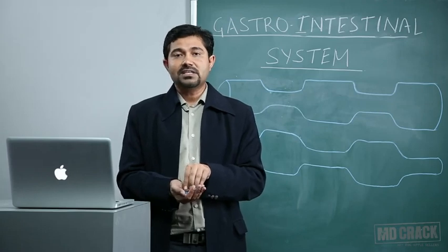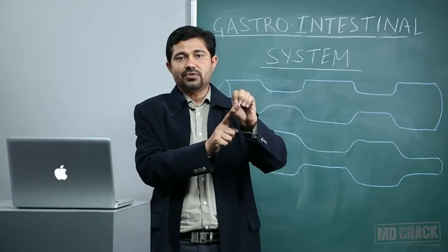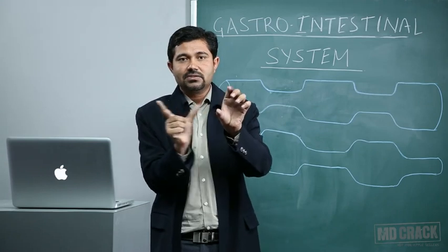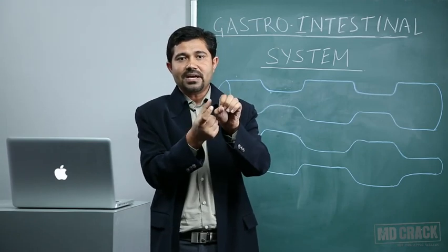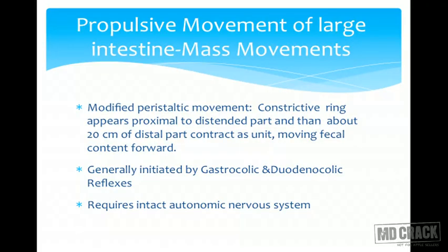The propulsive movement of the large intestine is called mass movement, which is important for driving the fecal matter forward. Whenever there is distension of the intestinal wall, a constrictor ring develops proximal to it, similar to peristalsis, and the distal 20-centimeter part contracts together, pushing the fecal matter forward. This is called the mass movement.